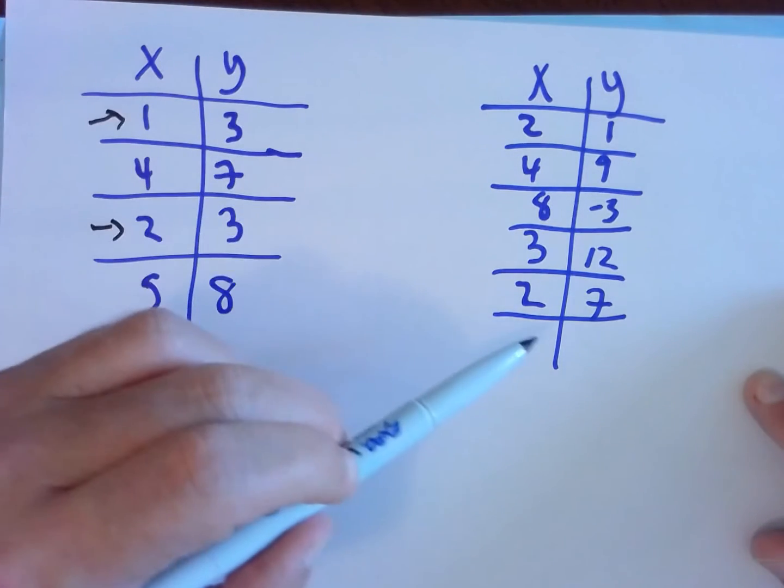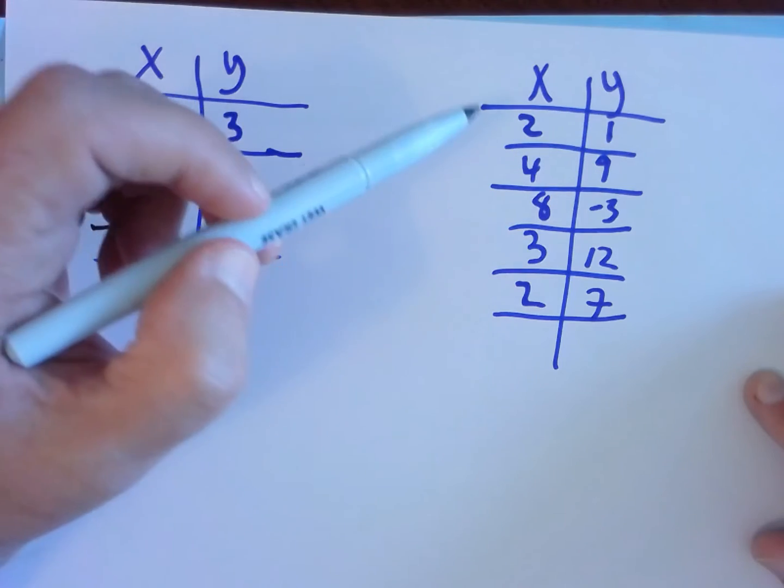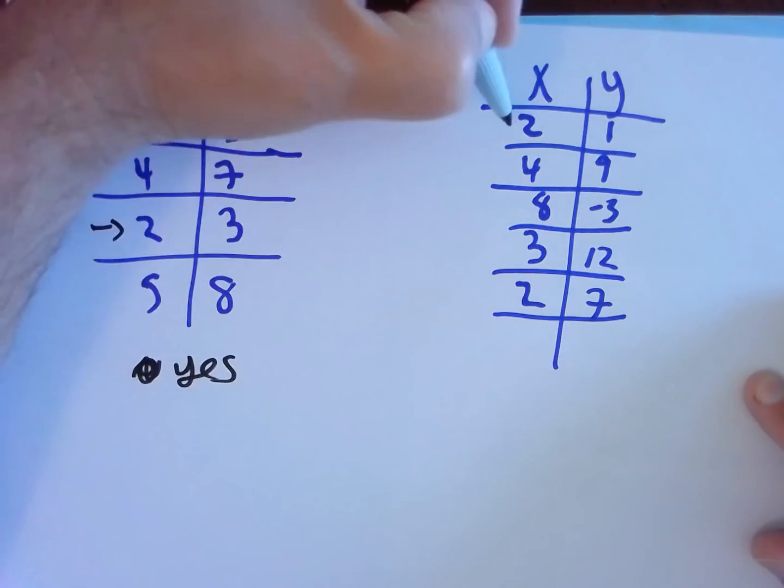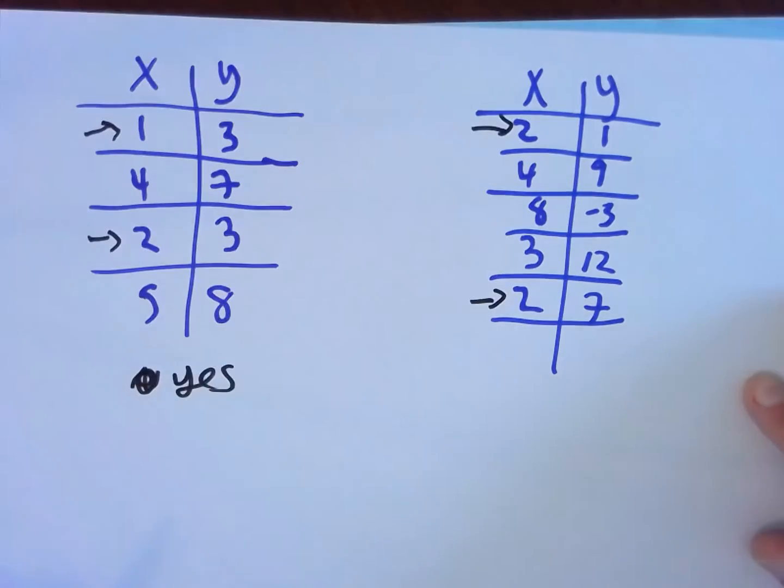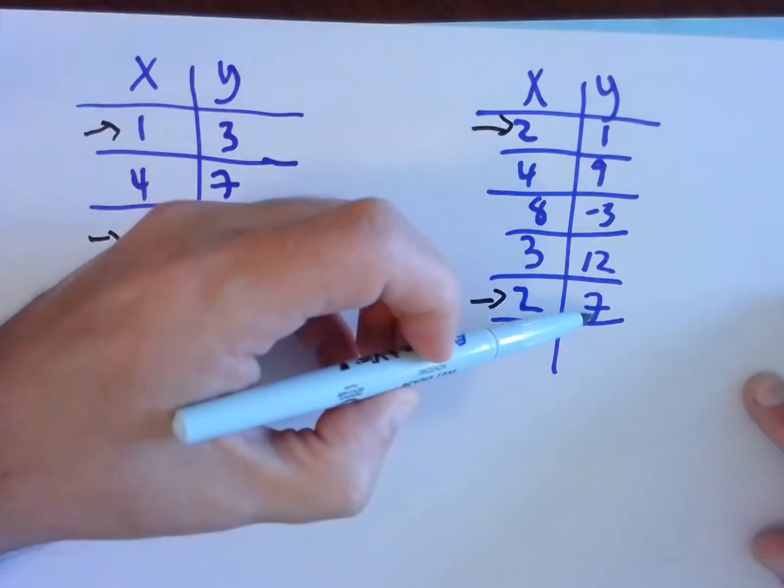What about over here? Do we have any repeated x's? Yes. The input 2 has two different outputs.